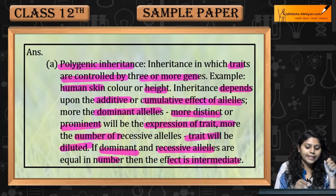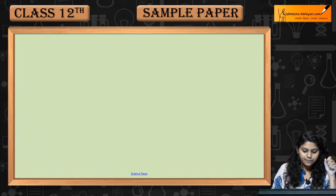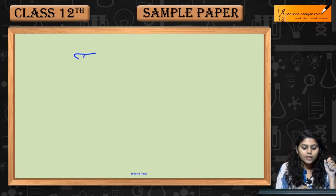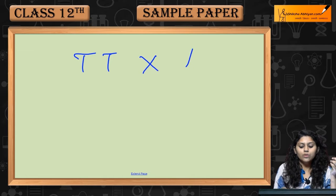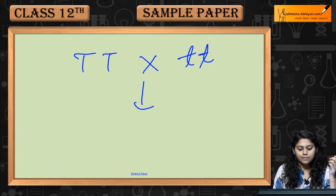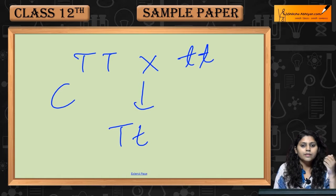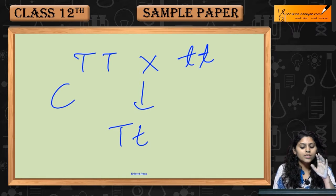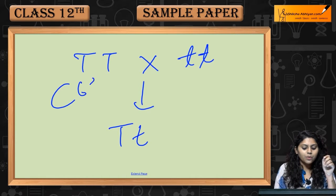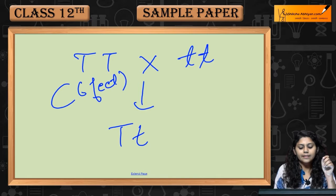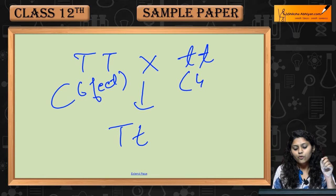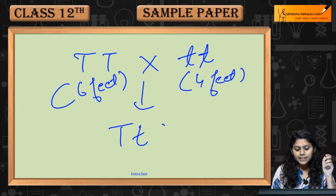For example, if we talk about human height — tall crossed with recessive. If we talk about 6 feet and 4 feet, then the intermediate is 5 feet.